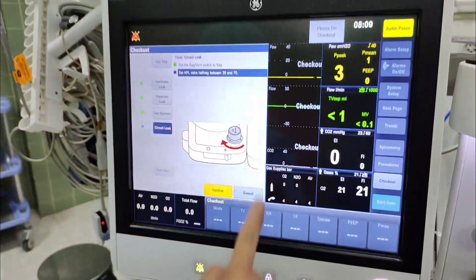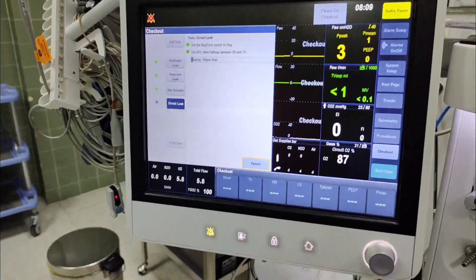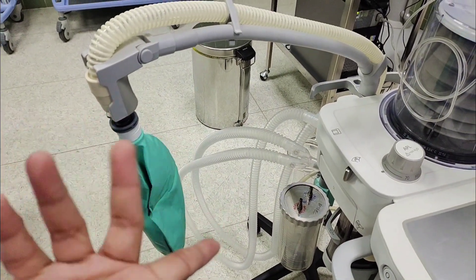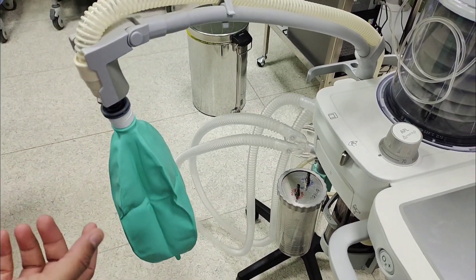It is written 30 and 70, confirm. You see, it will make the bag big and check if the bag is having any leak or not.